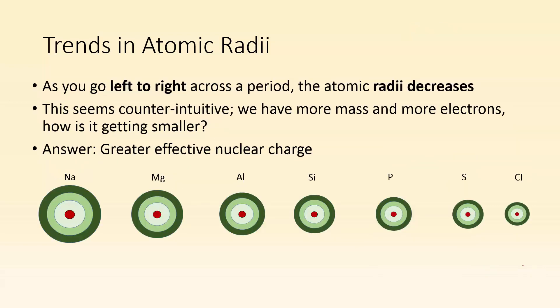As you go left to right across a period, the atomic radii decreases. This can seem counterintuitive because as we move left to right, we have more mass, more electrons. How are these atoms getting smaller? The answer is the greater effective nuclear charge. Sodium has an effective nuclear charge of plus one. Whereas if I move down to chlorine, its effective nuclear charge is plus seven. So the electrons on the outer shell for chlorine are feeling a plus seven pull, whereas sodium, same number of energy levels, only feel a plus one. Which one's going to pull those electrons in tighter? Chlorine. So that's why as you go left to right, the radii decreases. Even though it becomes more massive, the size gets smaller. It's like more dense.